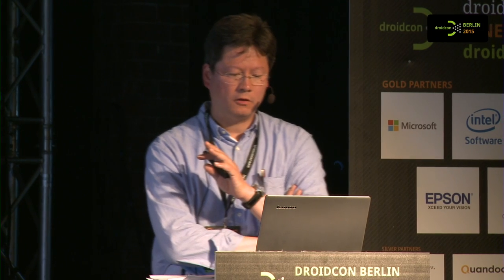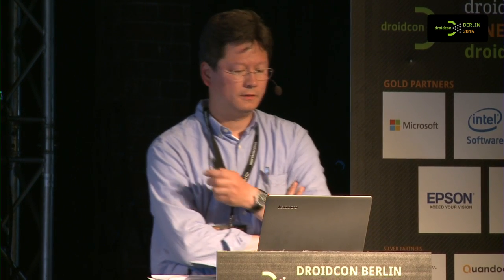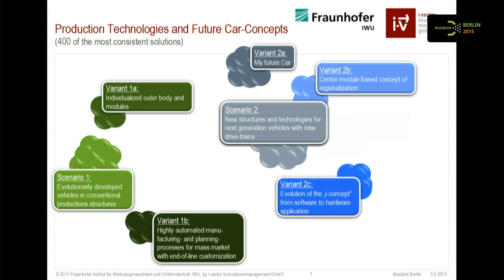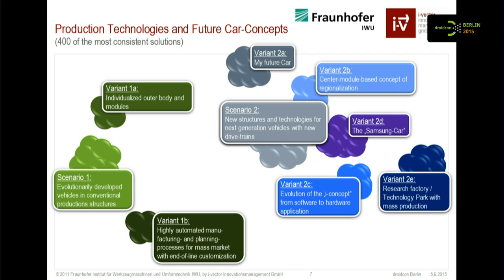The first cluster was very conventional: evolutionarily developed vehicles in conventional production systems, with sub-clusters of individualized cars and cars that look the same from the outer body and are only differentiated with end-of-line customization. Then we have totally different vehicles built in new structures of production systems with new powertrains — electric drives, hybrid drives, and other trends.